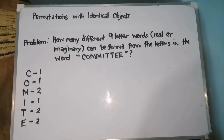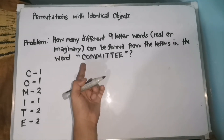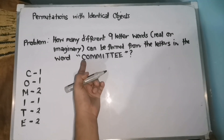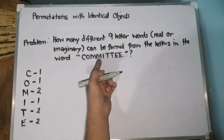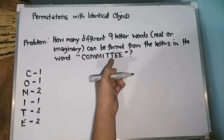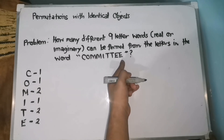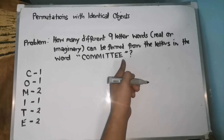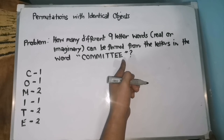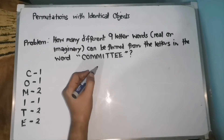To solve this problem: committee has 1, 2, 3, 4, 5, 6, 7, 8, 9 — has 9 letters. Therefore, ang ating N objects ay 9, so we have here 9 factorial.